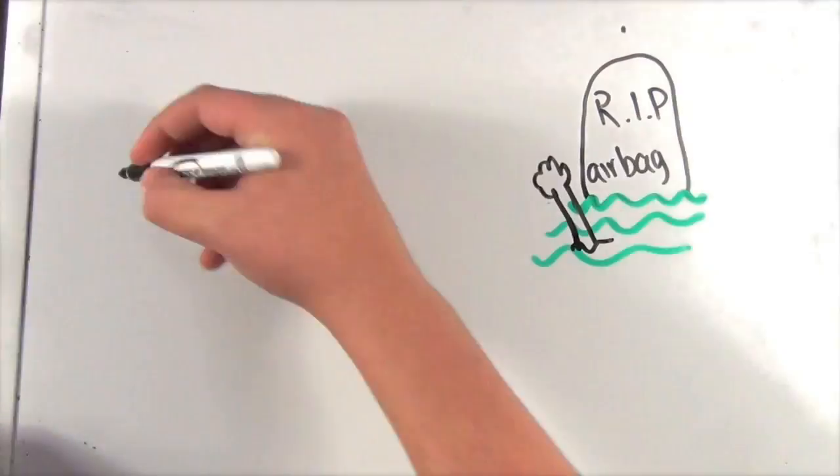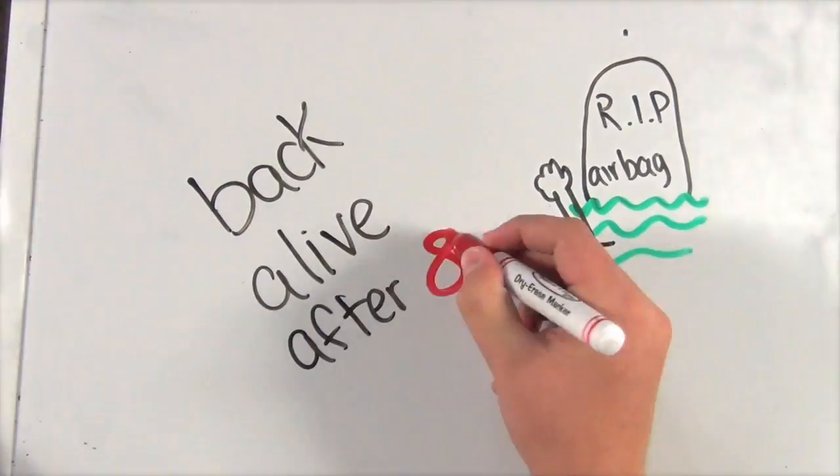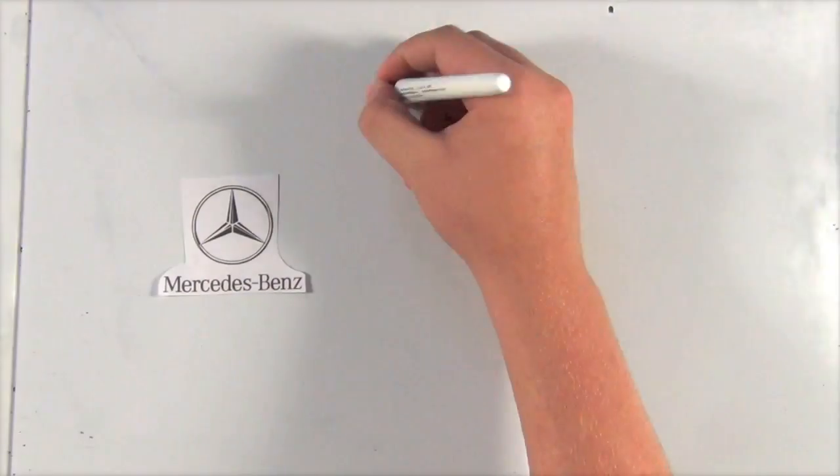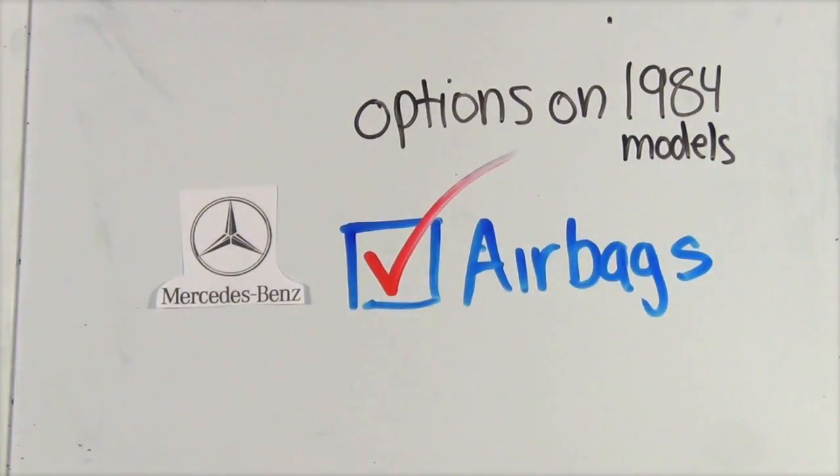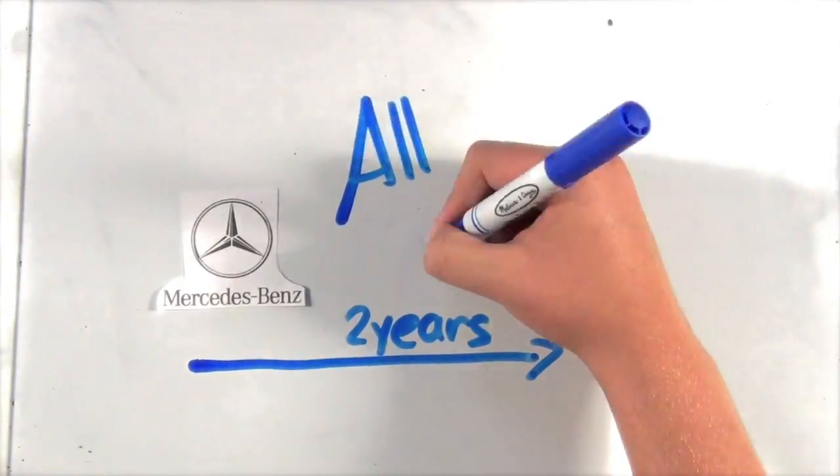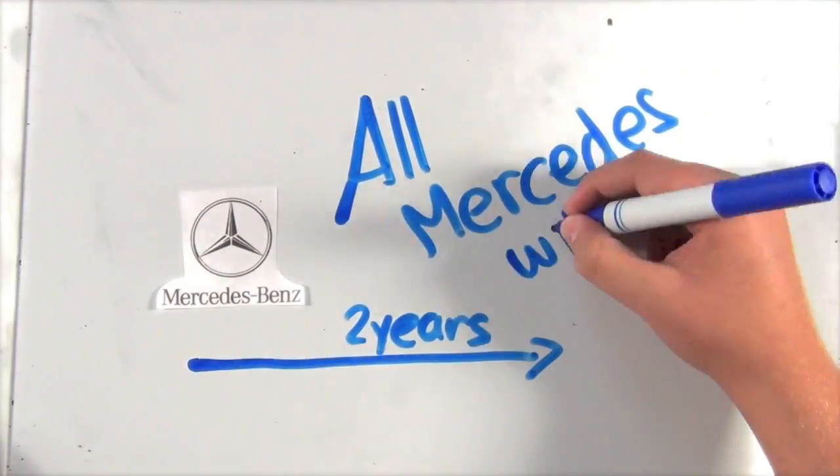The airbag wasn't seen until eight years after when Mercedes-Benz put the airbags in their 1984 models as an option. Two years after, Mercedes realized that all the Mercedes needed airbags.